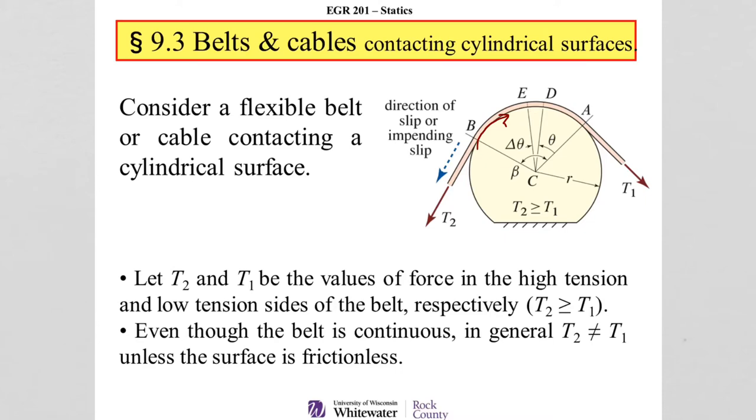So even though it is continuous, T2 does not equal T1 unless that surface is frictionless, and we are looking in this chapter on friction. So what does that mean, and how do we develop an equation for a relationship between T1 and T2?